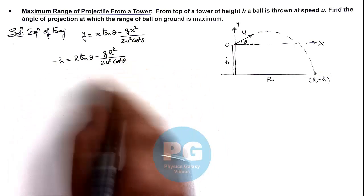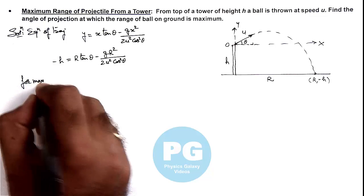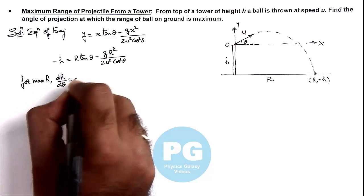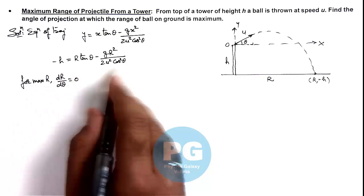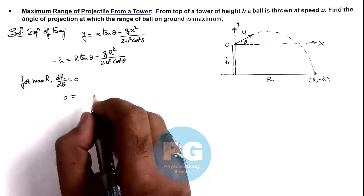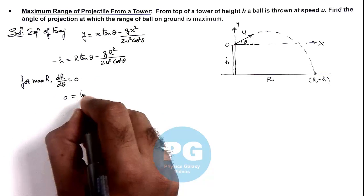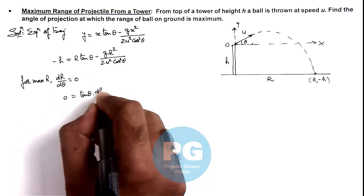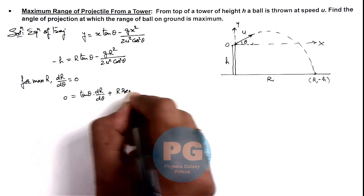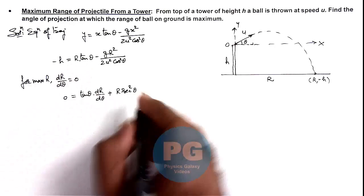In this expression, for maximum R, the value of dR/dθ should be equal to zero. If we differentiate it, the left-hand side becomes zero. On the right-hand side, differentiating using the product rule, we get: tan θ · (dR/dθ) + R·sec²θ.